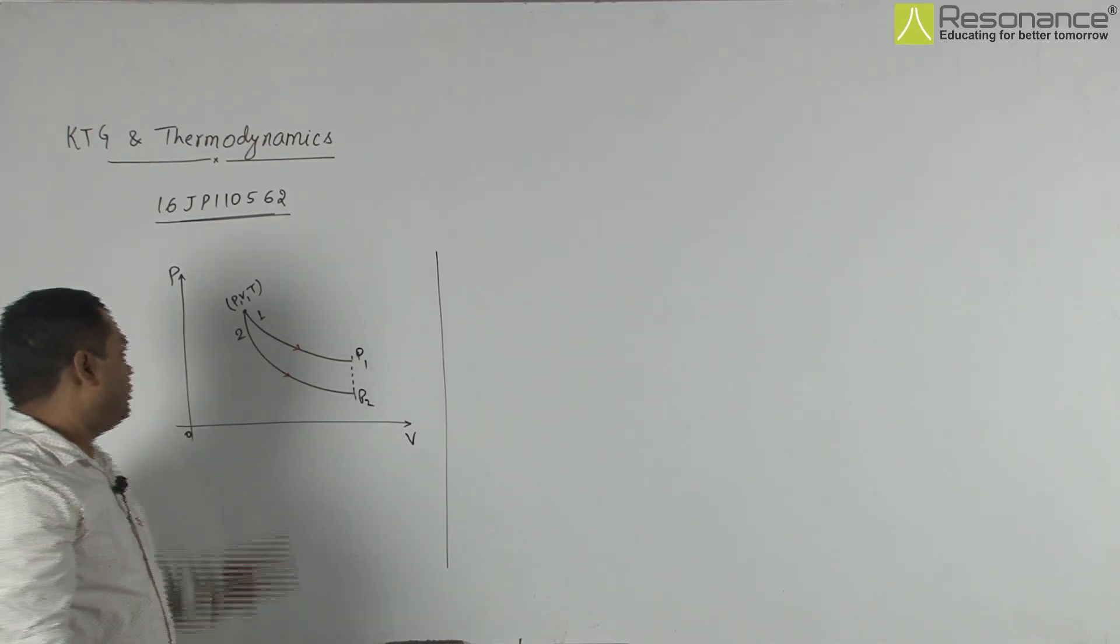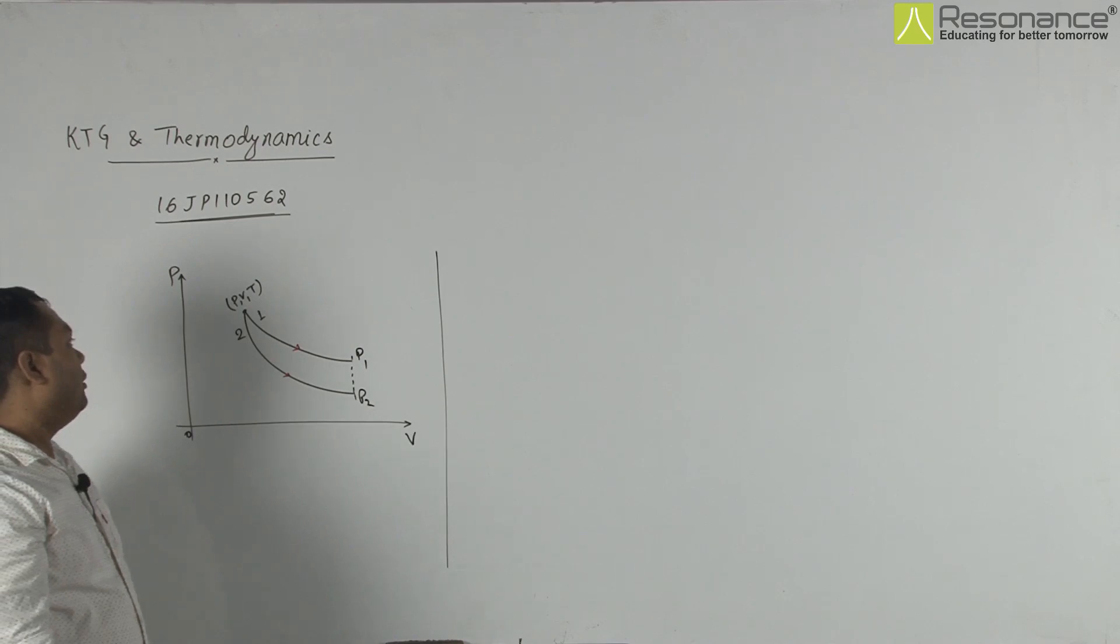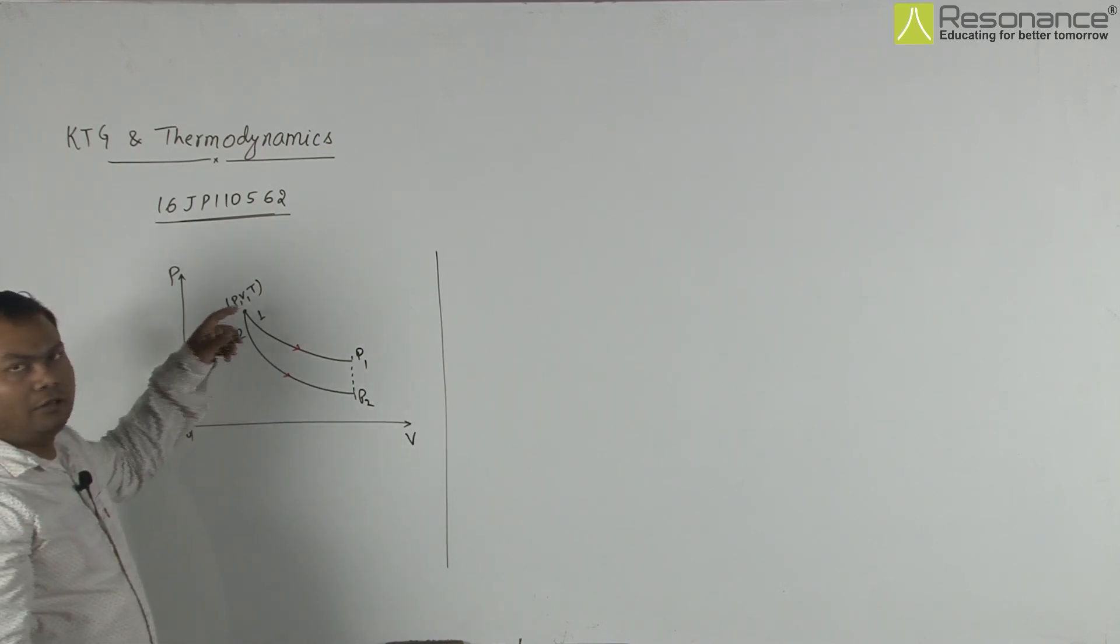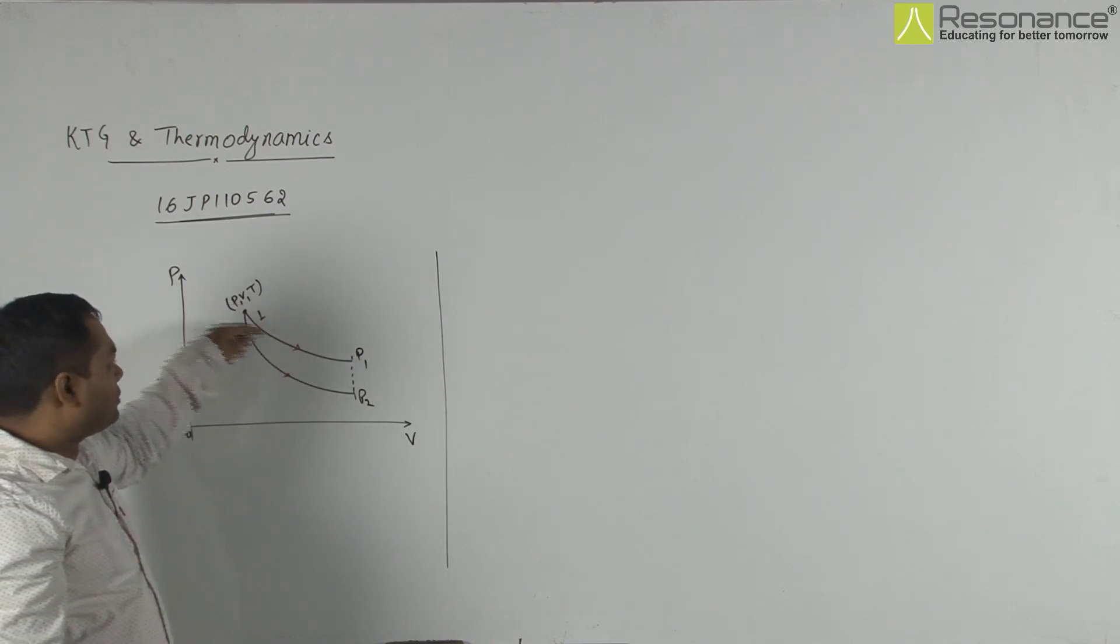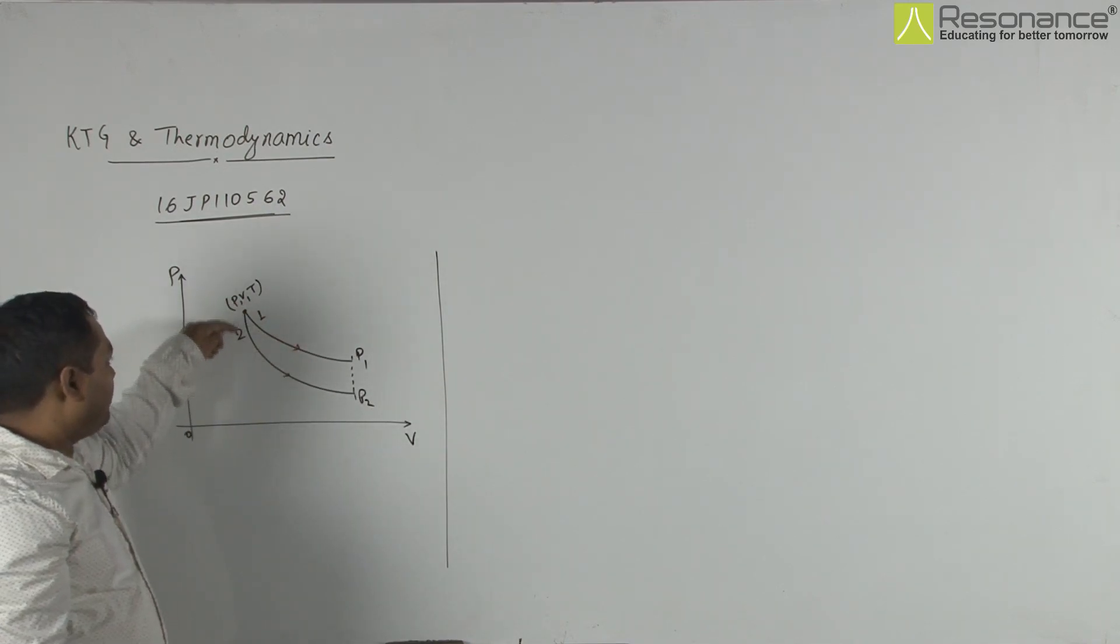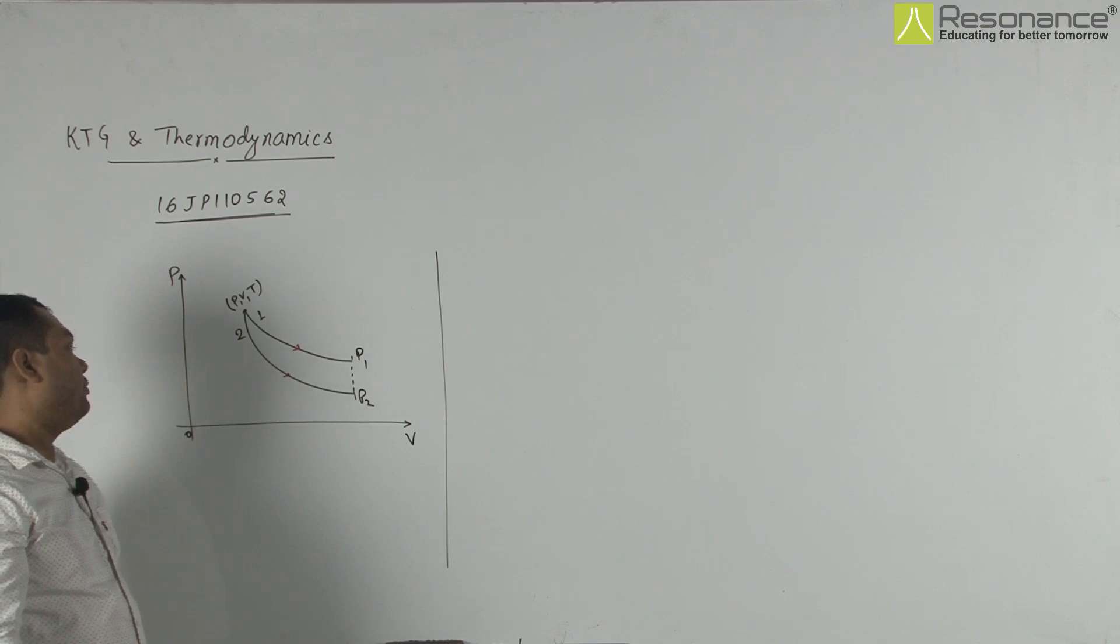In this question, this is a P-V diagram in which it is given that this is path 1, which is an external process, and this is path 2, which is an adiabatic process.